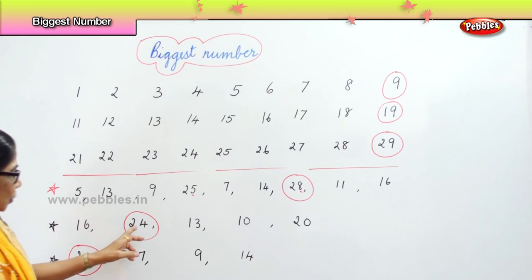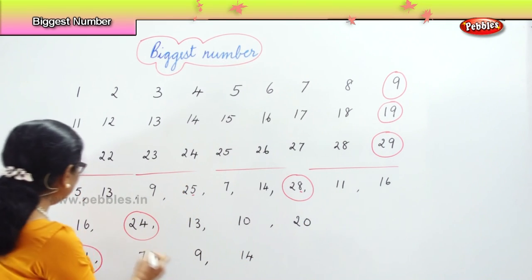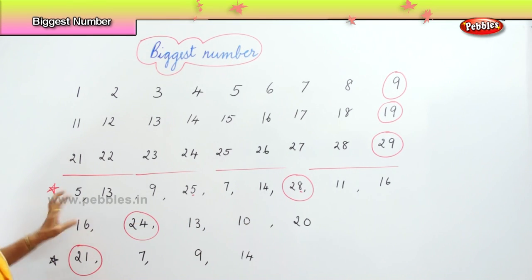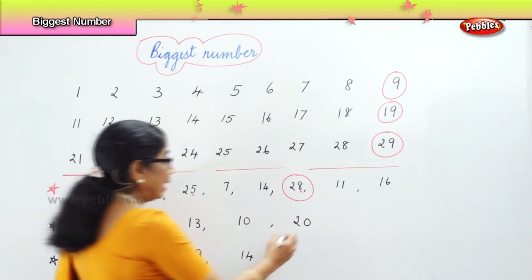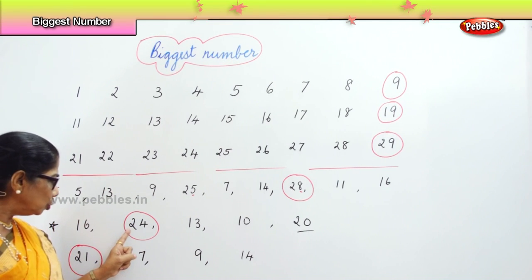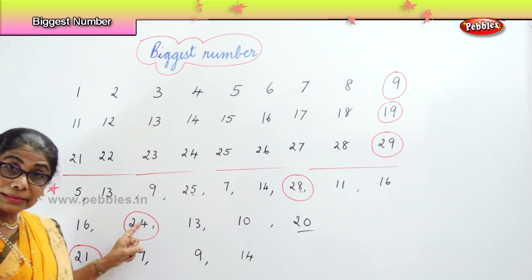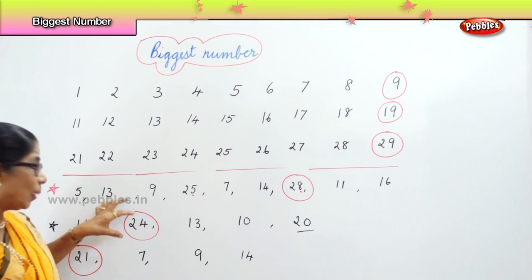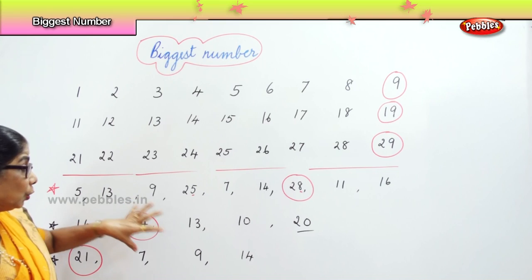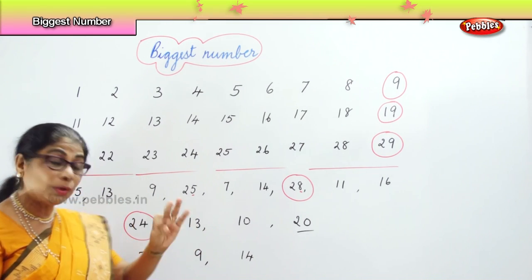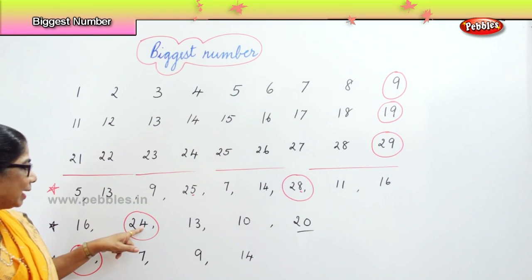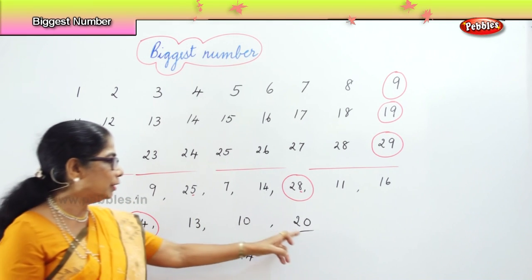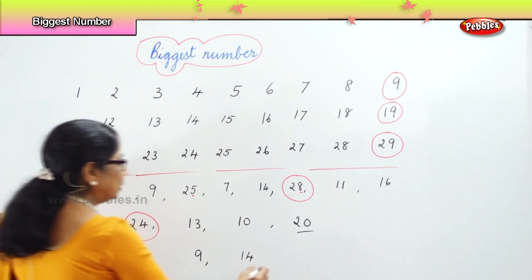Suppose I have one and six, one and three, one and zero — sixteen, thirteen, ten. Sixteen is bigger, but here you have twenty-four and twenty. First number is two for both. Second number of twenty-four is four; second number of twenty is zero. Twenty, twenty-one, twenty-two, twenty-three, twenty-four — we know twenty-four's second number is bigger. Therefore twenty-four is bigger of the two numbers.